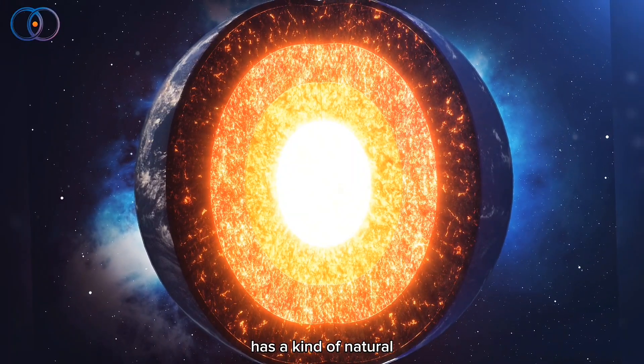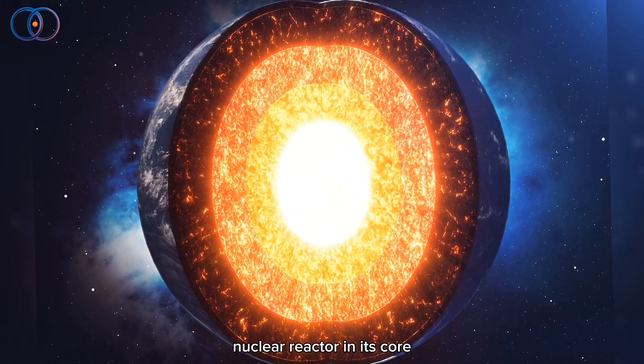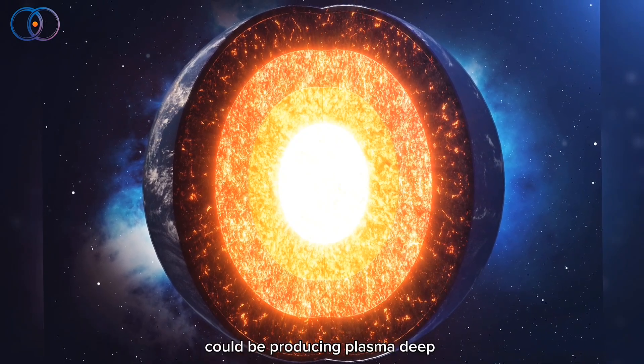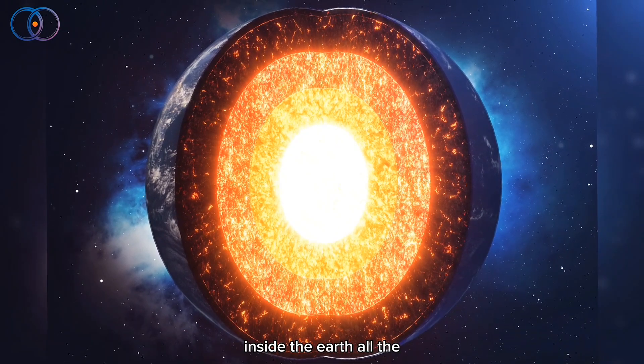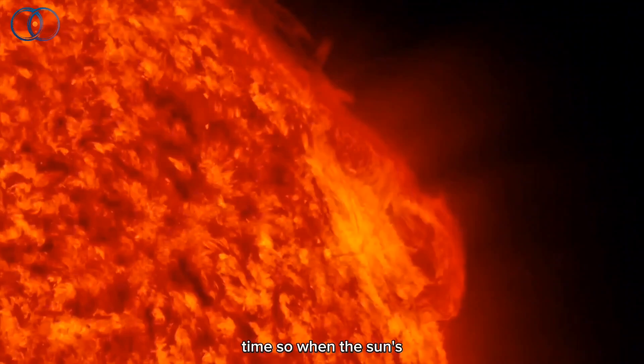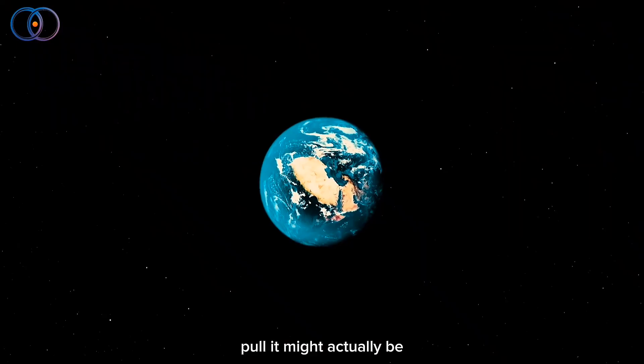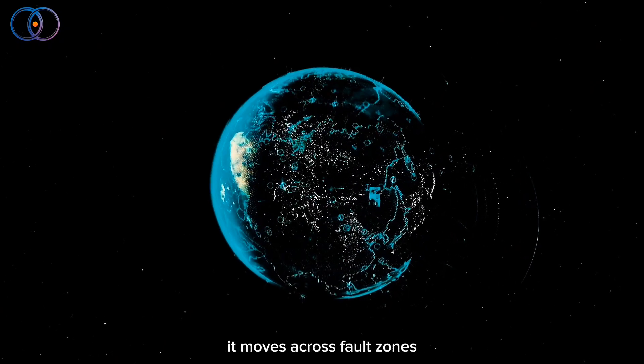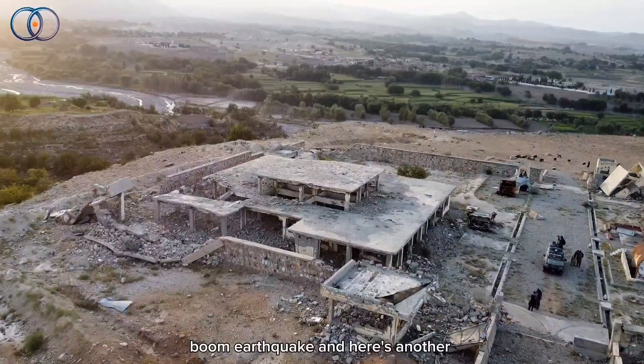Some scientists even think Earth has a kind of natural nuclear reactor in its core. Yep, like a tiny power plant. If that's true, it could be producing plasma deep inside the Earth all the time. So when the sun's strange solar wind creates a pull, it might actually be dragging that plasma up toward the surface. And again, if it moves across fault zones, boom, earthquake.